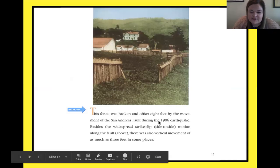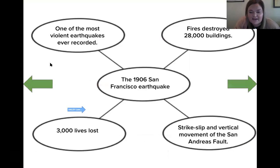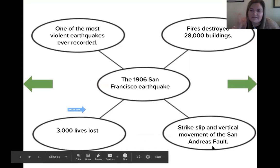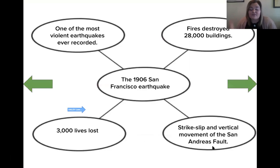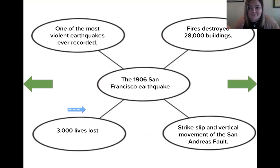Now we're going to the next page to find one more detail about this earthquake. 'This fence was broken and offset eight feet by the movement of the fault during the 1906 earthquake.' I don't feel like that's a super specific detail by itself, so let's keep reading. 'Besides the widespread strike-slip, side-to-side motion along the fault, there was also vertical movement as much as three feet in some places.' If we put those together, we can say: the strike-slip and vertical movement at the San Andreas Fault caused destruction — things were moving side to side and up and down, causing a lot of chaos.